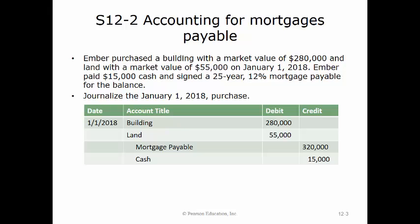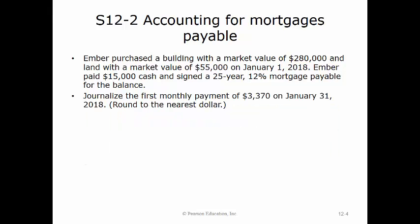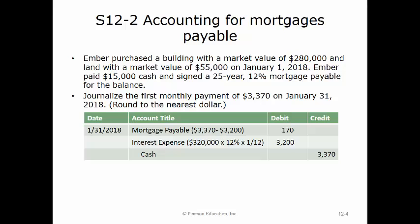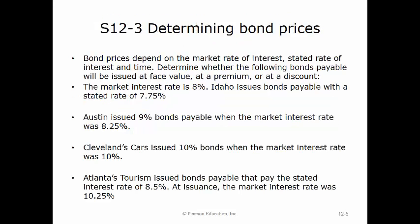Next, we journalize the first monthly payment of $3,370 on January 31st, 2018. We debit mortgage payable for the principal portion of $170, which is the difference between the payment of $3,370 and the interest of $3,200. The interest expense equals 12% times the mortgage balance of $320,000 for one month. Cash is credited for the payment of $3,370.